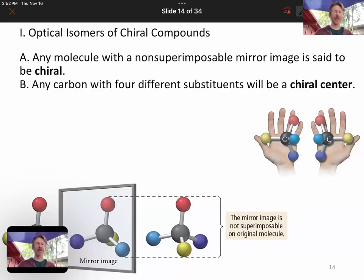Now it's time to talk about another kind of stereoisomer. They're called optical isomers, and these are specifically for chiral compounds. Chiral, by the way, is the Greek word for hand.